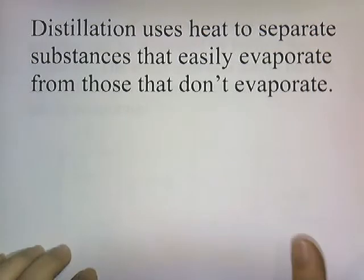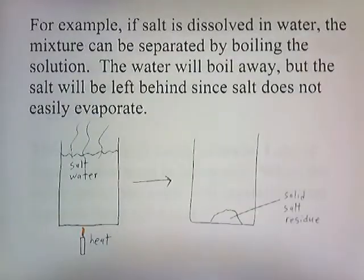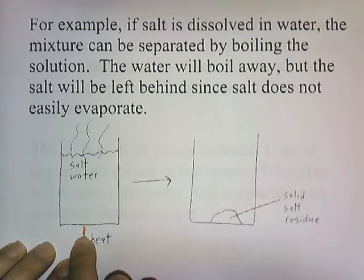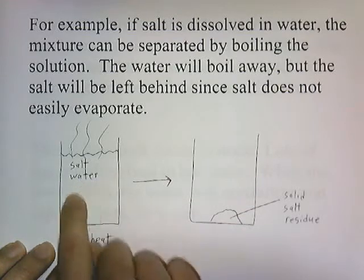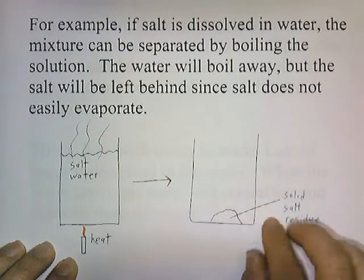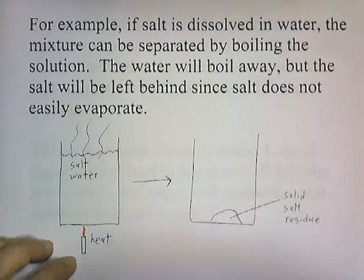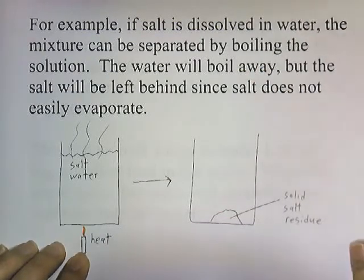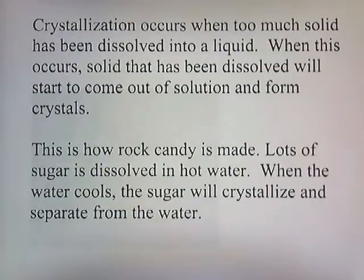Distillation uses heat to separate substances that easily evaporate from those that don't. If salt is dissolved in water, the mixture can be separated by boiling the solution — the water boils away but the salt is left behind, since salt doesn't easily evaporate. Normally when you think of distillation, you think of recapturing the liquid that has evaporated.